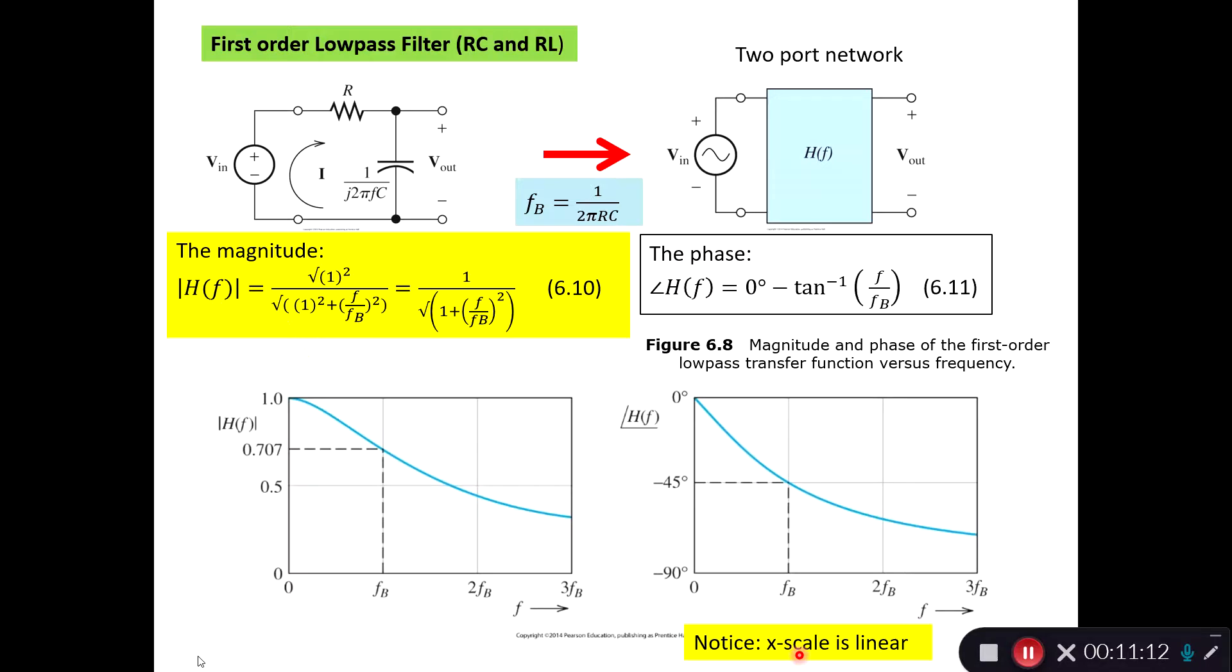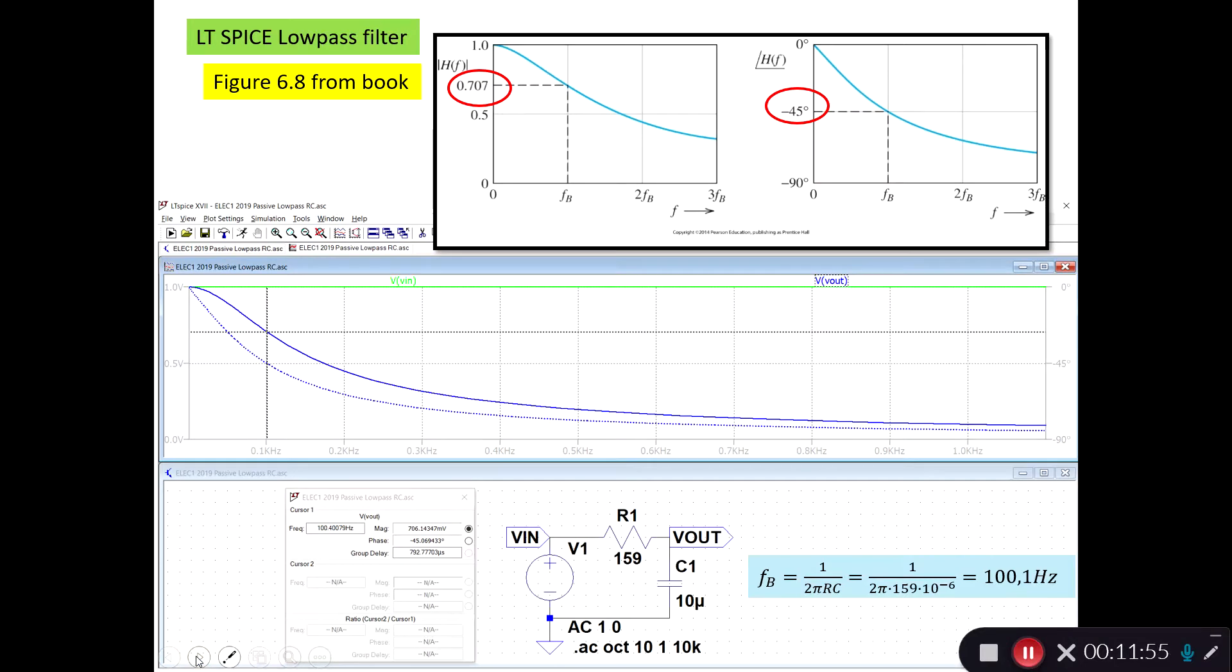As I wrote here, you have to notice this is a linear scale. If we had a logarithmic scale, it would look different. Typically, we will simulate filters with a logarithmic scale, because then we can have much more information on one window. Normally, the cutoff frequency and how it behaves up here, this is not easy to see if it's really flat or how it looks on a linear scale.